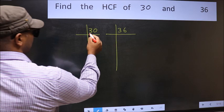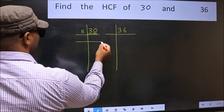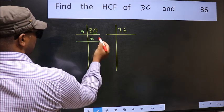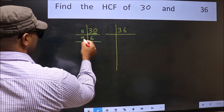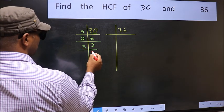Next, here we have 30, last digit 0, so take 5. When do we get 30 in the 5 table? 5 times 6 is 30. Now 6 is 2 times 3 is 6. 3 is a prime number, so 3 times 1 is 3.